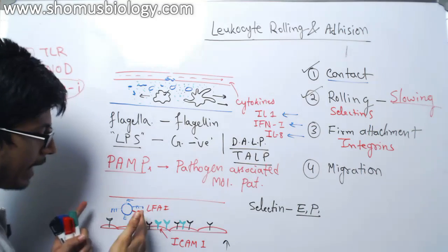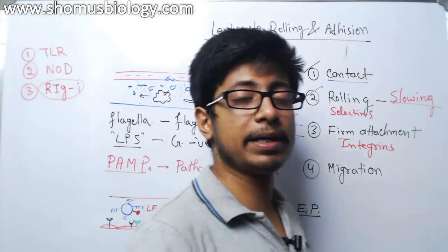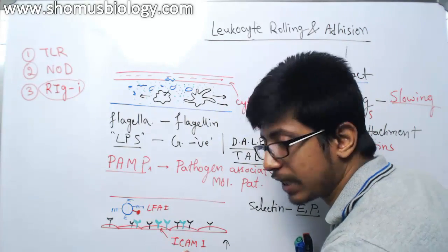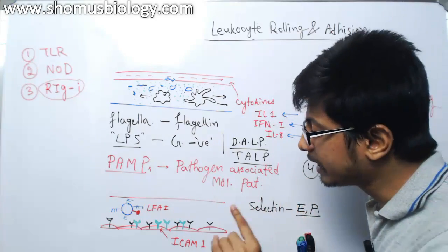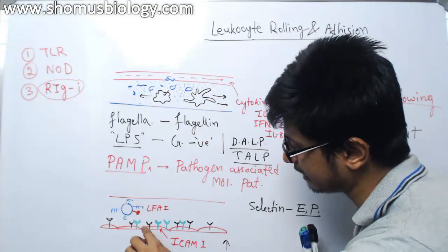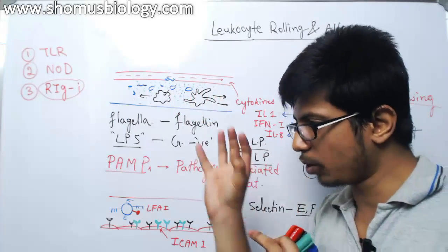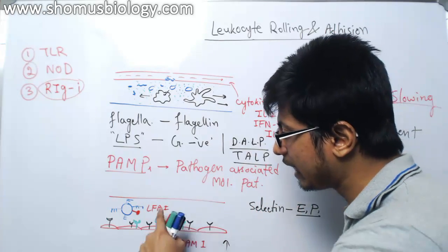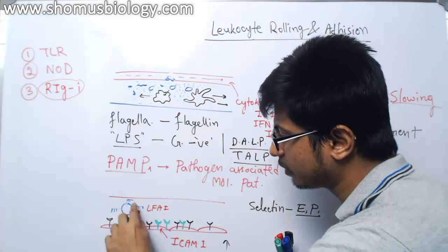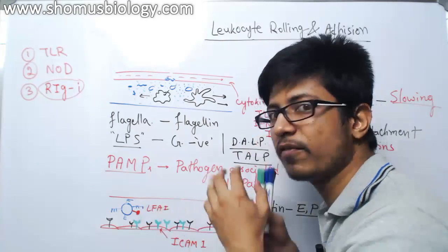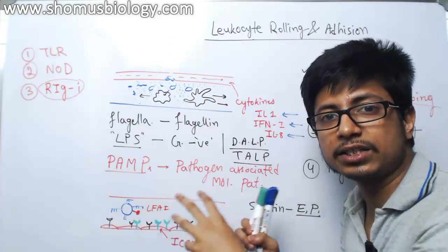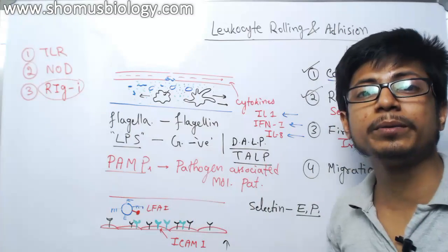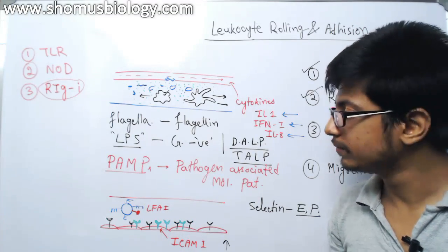Although leukocytes have LFA-1 from the beginning, and endothelial cells may have ICAM-1, this interaction is not that strong ordinarily. However, if there is a presence of interleukin-8 on the endothelial cell surface — because they acquire interleukin-8 from the area and display it on their surface — and the leukocytes have interleukin-8 receptors, then the binding of LFA-1 and ICAM-1 gets much more stabilized. So with the help of these three interactions together, the leukocyte is finally stopped. Integrins do their job, but integrin functionality is enhanced in the presence of interleukin-8.